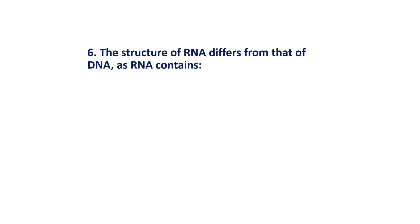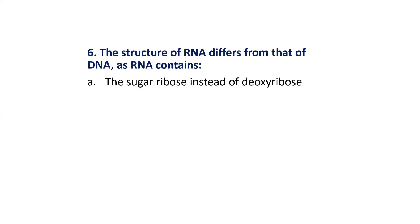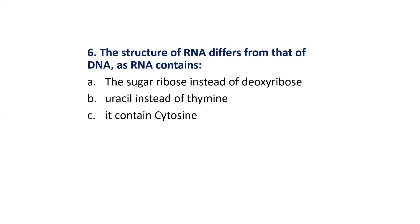MCQ 6: The structure of RNA differs from that of DNA as RNA contains — Options are: The sugar ribose instead of deoxyribose; Uracil instead of thymine; Cytosine; Both A and B. The correct answer is Option D: Both A and B.